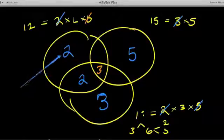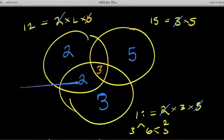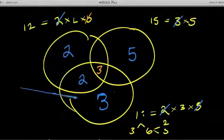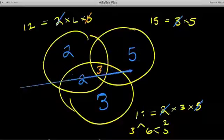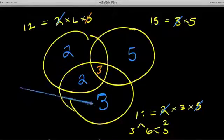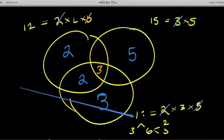So if we look at each individual circle, 2 times 2 times 3, these are the prime factors that multiply to get to 12. 3 times 5, these are the prime factors that multiply to get to 15. And 2 times 3 times 3, these are the prime factors that multiply to get to 18. How do I find the lowest common multiple?